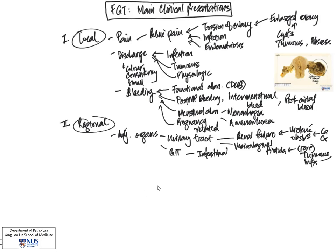There can also be conditions that affect the gastrointestinal tract. Conditions such as pelvic inflammatory disease that gives rise to adhesions can sometimes affect the loops of bowel that are close to the uterus or close to the pelvic organs and give rise to intestinal obstruction.